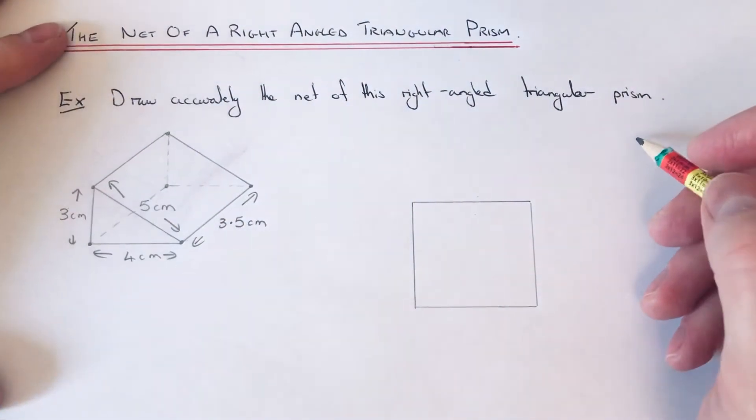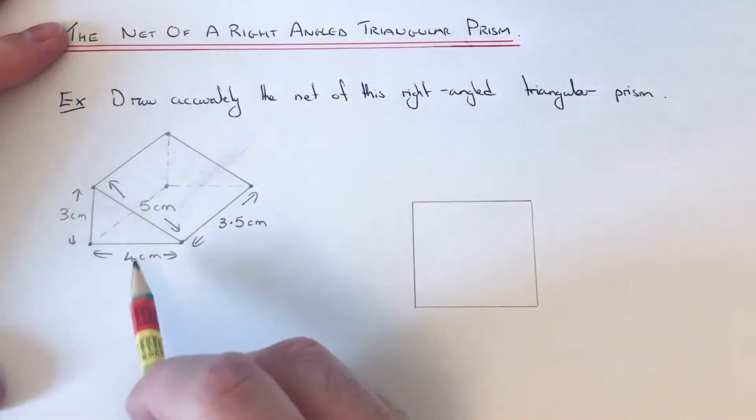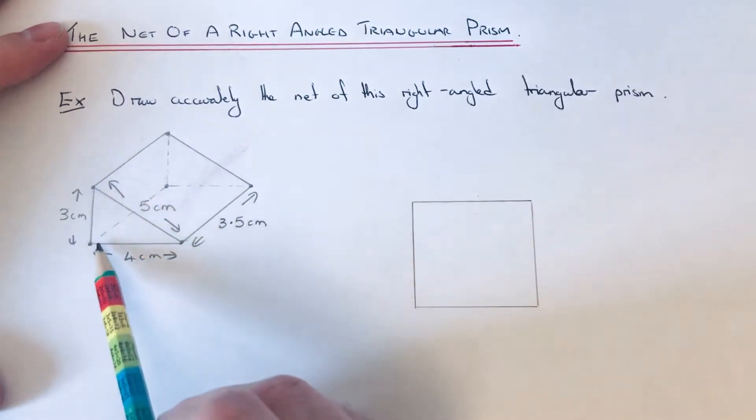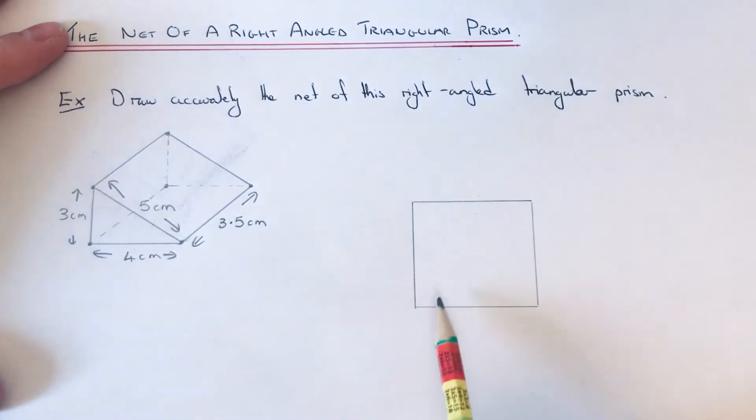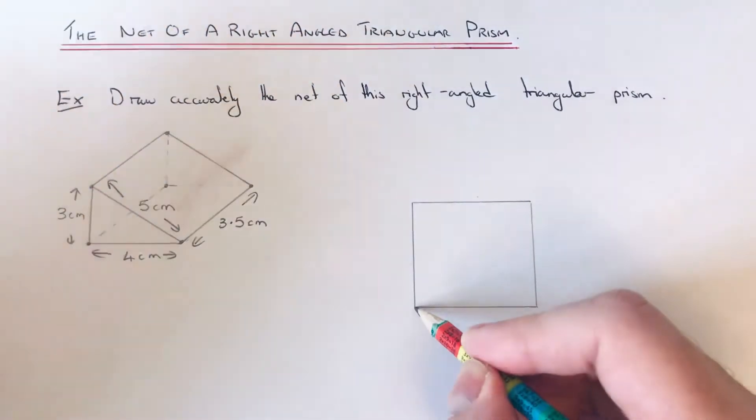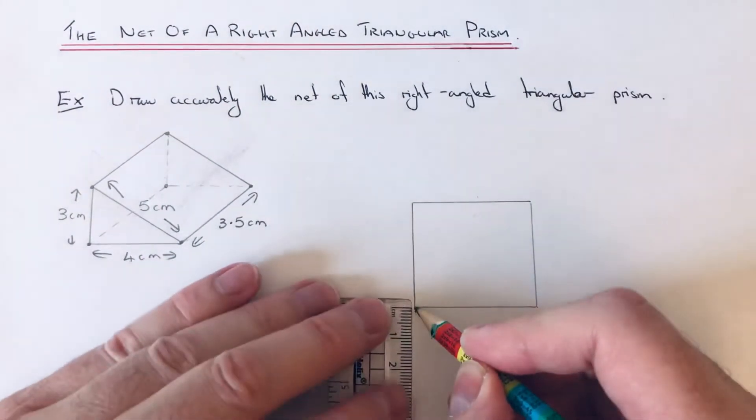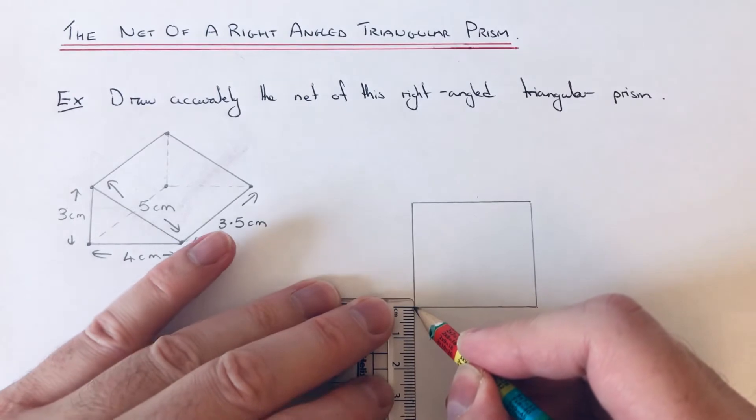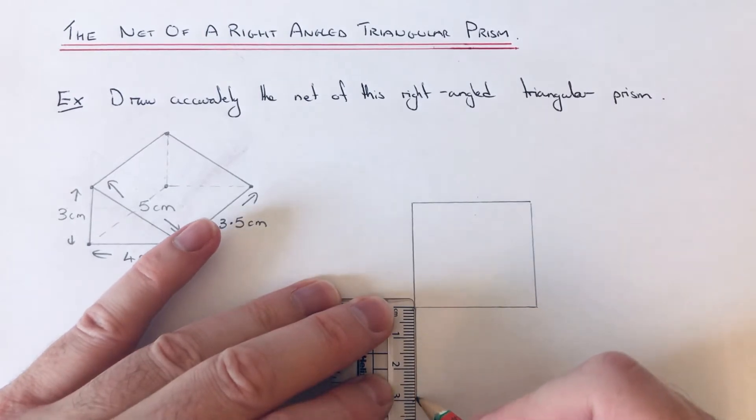Okay, so that's the bottom face done. Next I'm going to do the triangular face at the front. The triangular face has a height of three and the base length is four. We already have the base length here which is four, so we just need to go out three centimeters and then